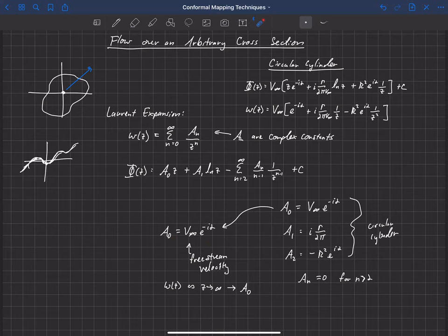The trick for the more complex geometries is simply that we need to figure out how to solve for these a sub n values, for n really any of them except for a_0. a_0 we know because of the free stream, but for any other geometry, we're going to have to now solve for the a_1 through a_n complex constants. And for the circular cylinder, we know what those are, but for more complex geometry, we'd have to find a way to solve for these constants that then make that geometry a streamline of the flow.